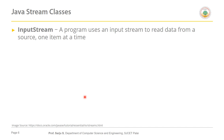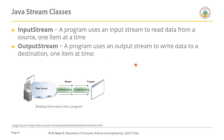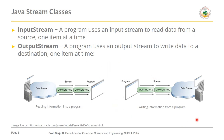A program uses the input stream to read data from a source, one item at a time. A program uses the output stream to write data into a destination, one at a time. So the input stream reads data from a data source into a program, and if the program wants to write data into the data source then it has to use the output stream.